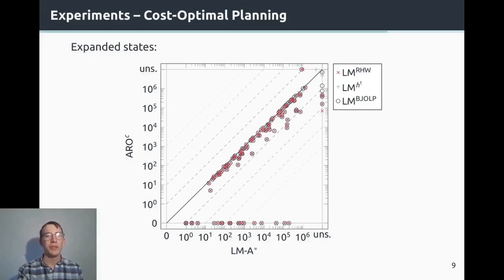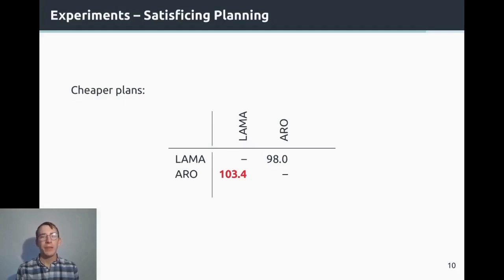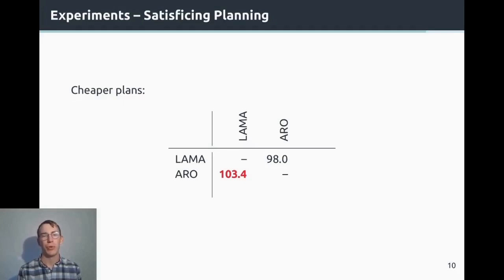We also substituted RO in the satisficing planner LAMA and observed what happens there. It is not easy to compare the number of expanded states directly; instead we focus on plan quality. The table shows that there were 103 instances where our RO method found a cheaper plan, while LAMA found a cheaper plan in only 98 instances out of over 2000. The difference isn't large, but we mainly want to show there is no negative effect from substituting our admissible approach to progressing the landmark graph.